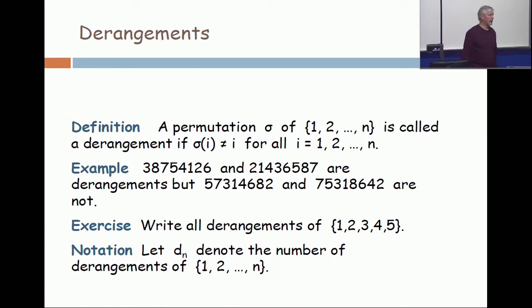So here's what I want you to do. Take out a piece of paper and write by hand all the derangements of the integers from 1 to 5. There are 120 permutations altogether. So if you get more than 120, you've done something wrong. But just take out a piece of paper and write all the permutations of 1, 2, 3, 4, 5 that are derangements and count them.